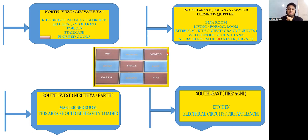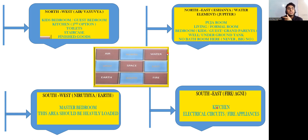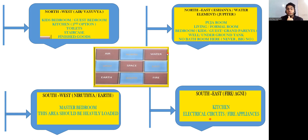Southeast has the fire element and the god Agni Dev. Since it is a fire element, we keep things related to fire here — the kitchen, where cooking happens, is connected to fire. Also, electrical equipment belongs here. Vastu is not only for residential buildings; in commercial buildings like malls or factories, electrical equipment and machinery can be kept in the Southeast direction.